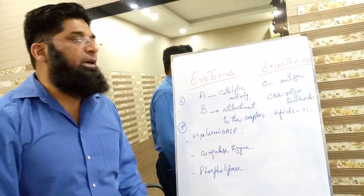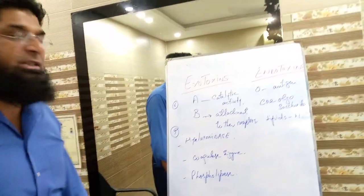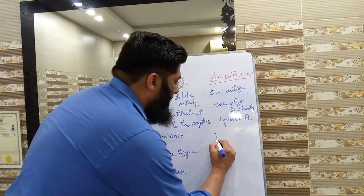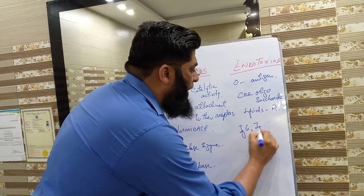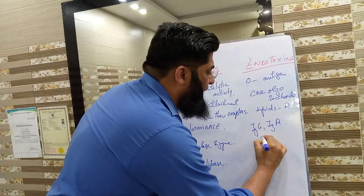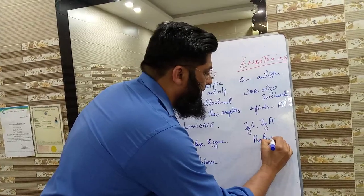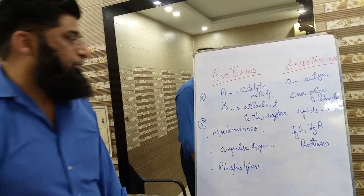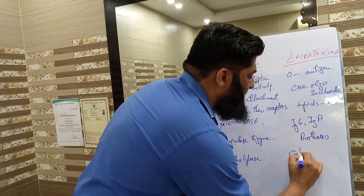On the other hand, endotoxins have enzymes like IgG or IgA proteases, hyaluronidase, and catalase.